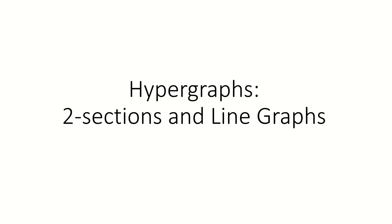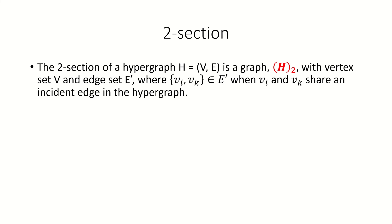Today we're going to cover two sections and line graphs, which are both types of ordinary graphs that can be constructed from a hypergraph. The two section of a hypergraph is an ordinary graph with the same vertex set as our hypergraph, and with the property that two vertices v_i and v_k are adjacent when v_i and v_k share an incident edge in the hypergraph.